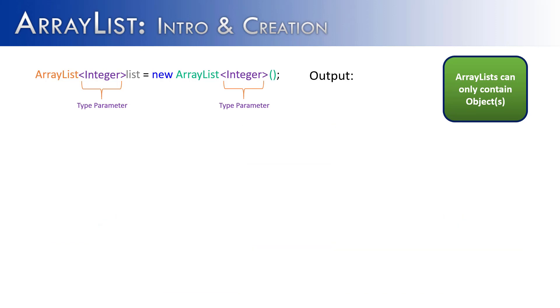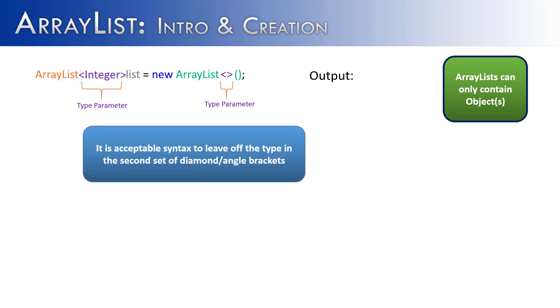One more point I'd like to make about creating an ArrayList. Programmers love shortcuts and Java has added a small little shortcut when creating an ArrayList. If a programmer would like to take out the second type inside of the second type parameter, they can and the program will still run. So it is acceptable syntax to leave off the type in the second set of diamond or angle brackets as we see in the example above. This example would compile just fine and it's a little bit shorter typing if you're having to create or instantiate an ArrayList object.